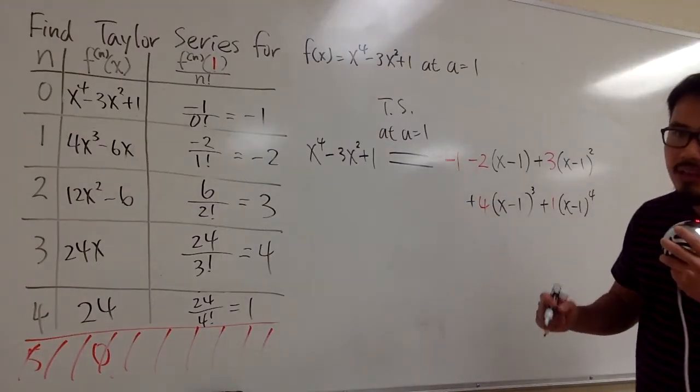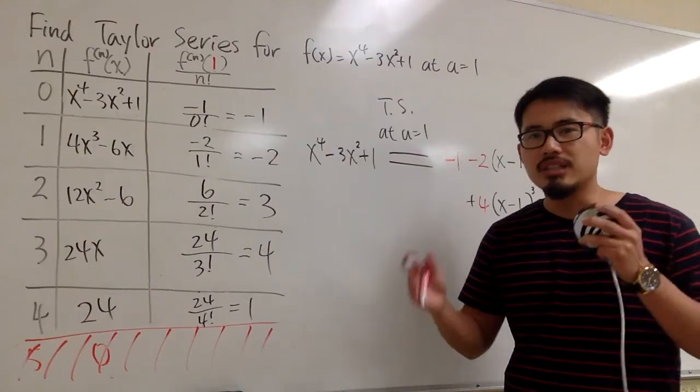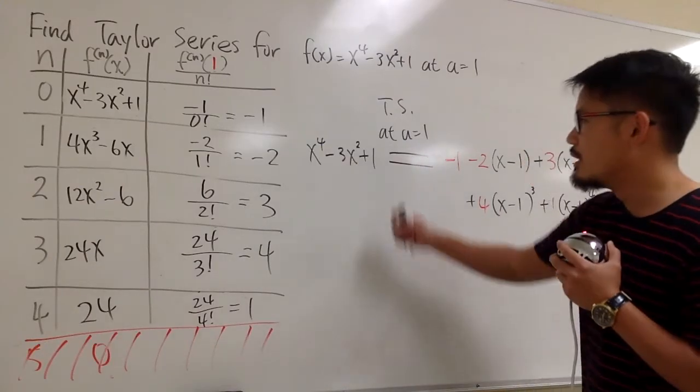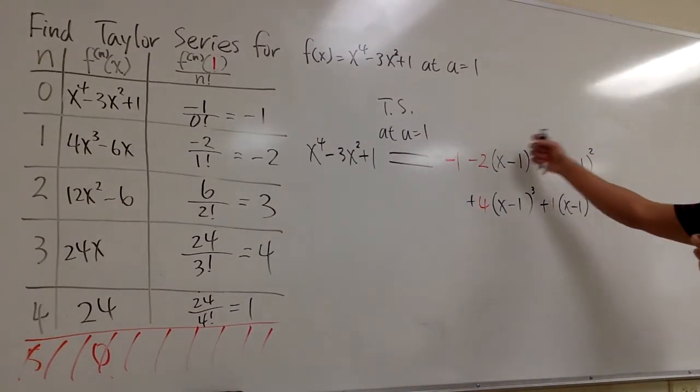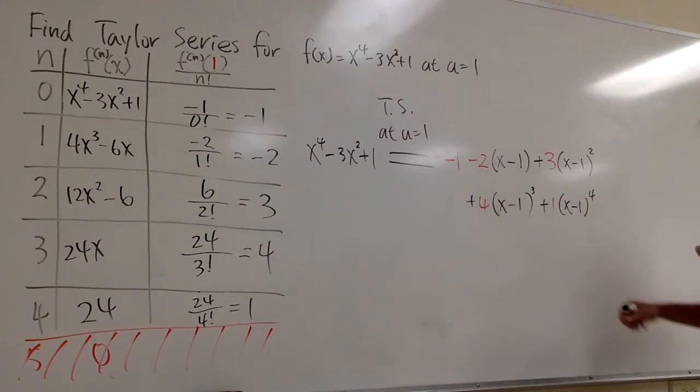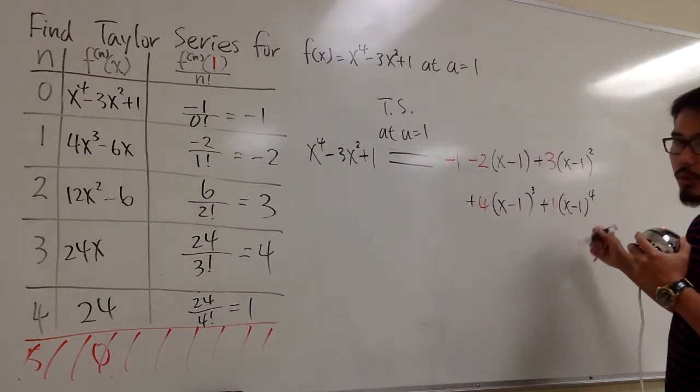At the very end, we have to state what's the radius of convergence. But we know the left-hand side is identically equal to the right-hand side, because polynomial, polynomial.